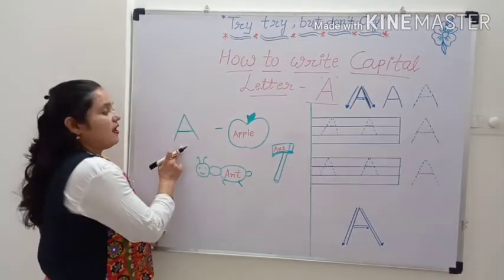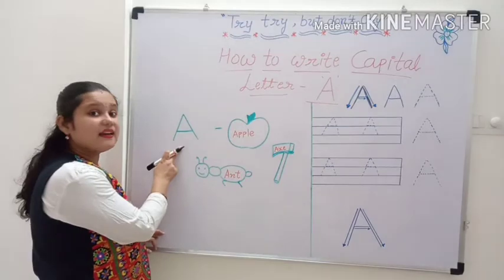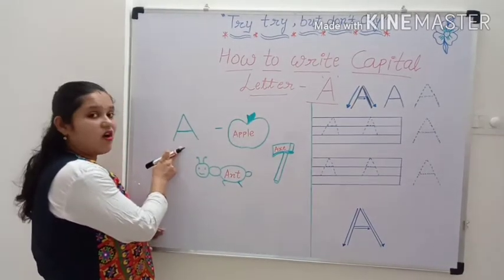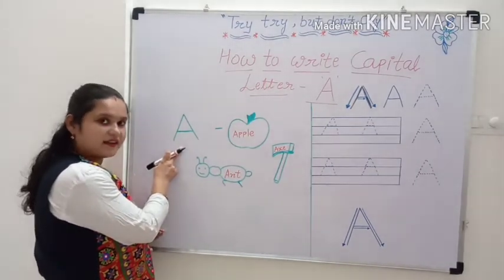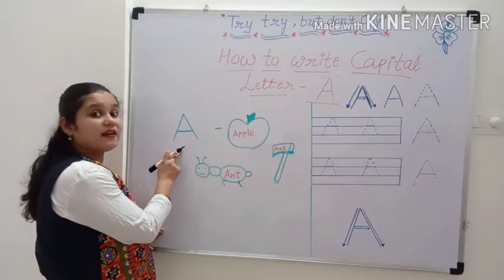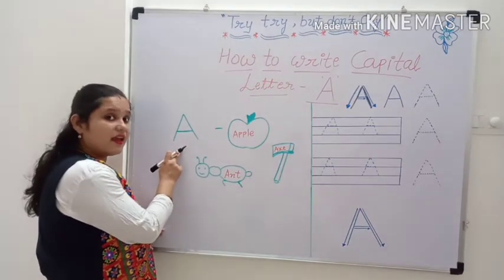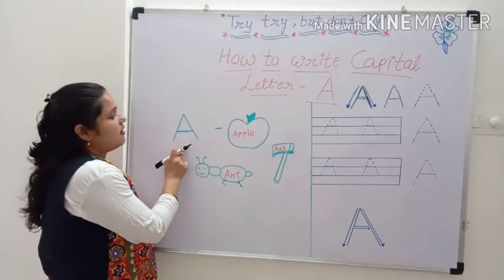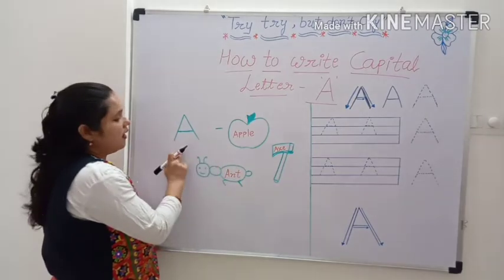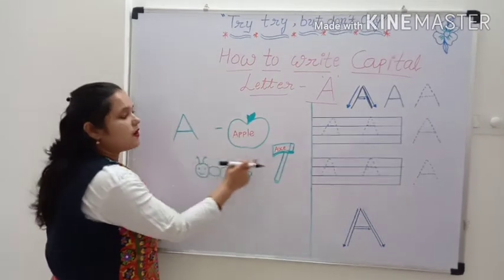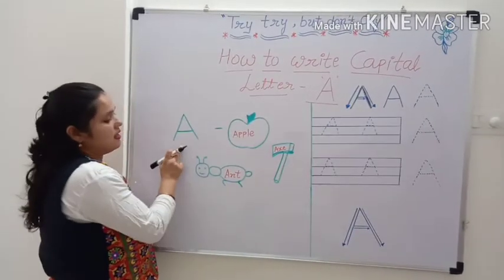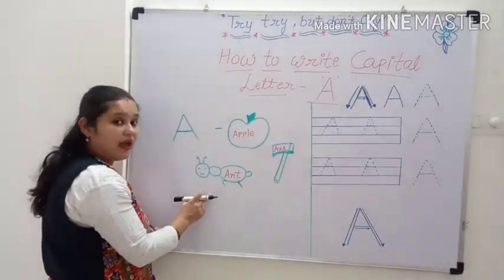A. This is letter A. It's called letter A. This is capital letter A. A is for apple. A is for axe. A is for ant.